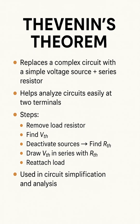The core idea behind this theorem is to take any complex, linear part of a circuit — no matter how many voltage sources, current sources, and resistors it contains — and replace it with a much simpler, functionally equivalent circuit.